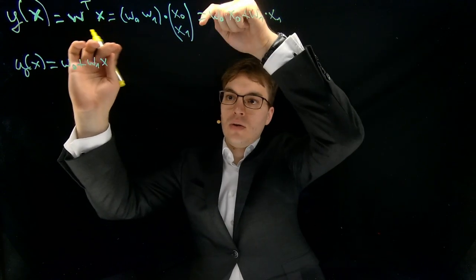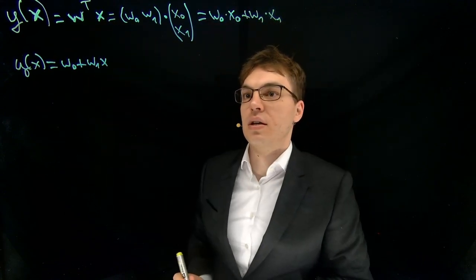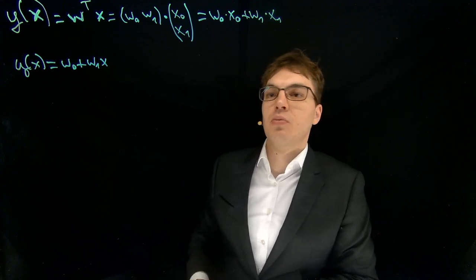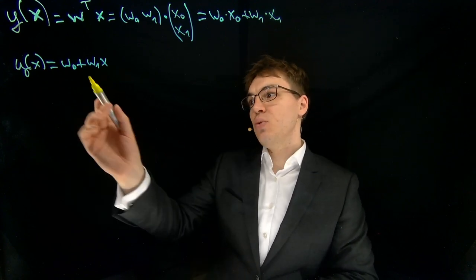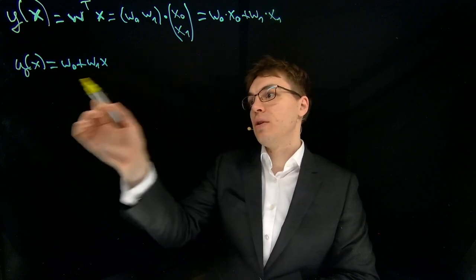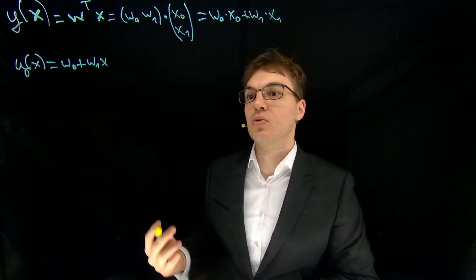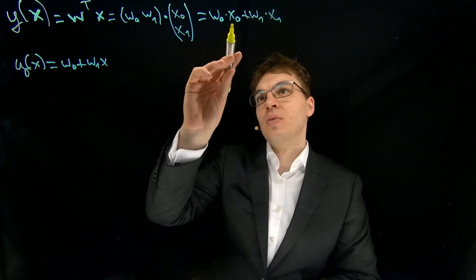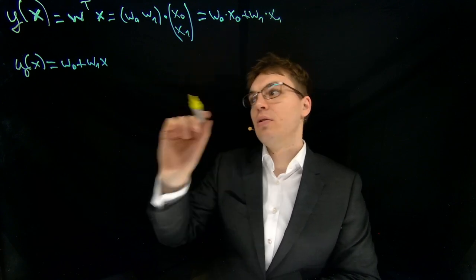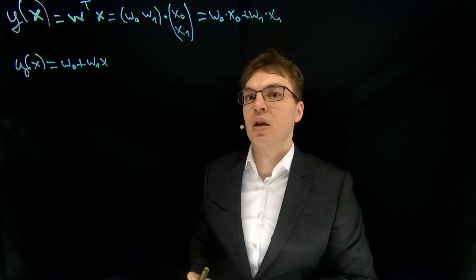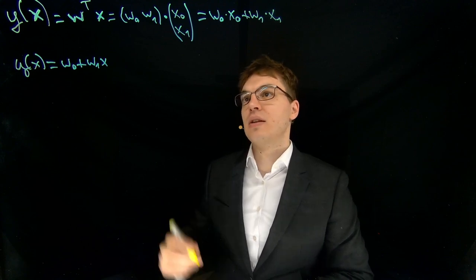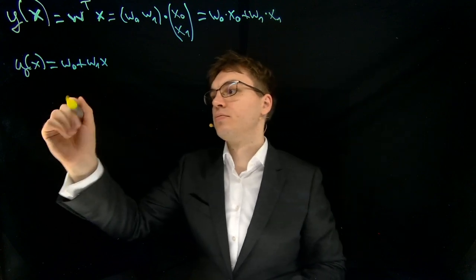So this is the way we are computing this matrix or vector multiplication, this dot multiplication. And if we compare this over here with our straight line equation that you know from school, then you see that two things are a bit different. This x0 here doesn't really exist there. So what we want to do here is we want to set x0 to 1 always.